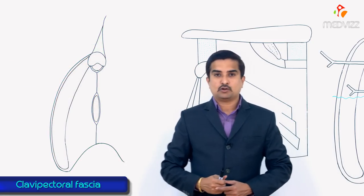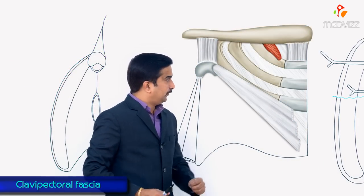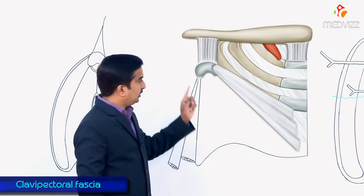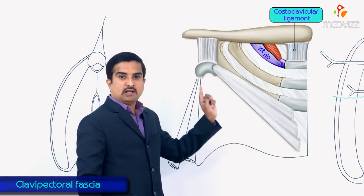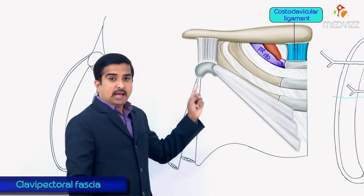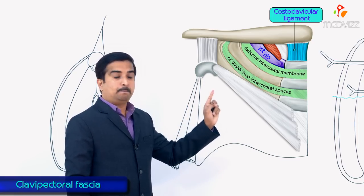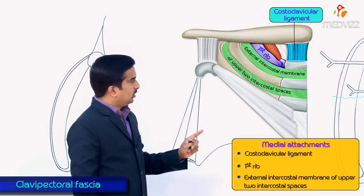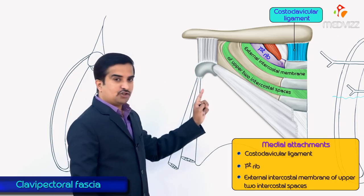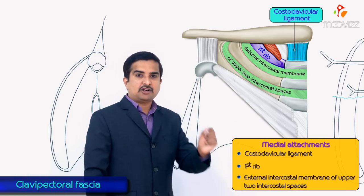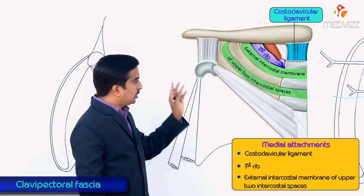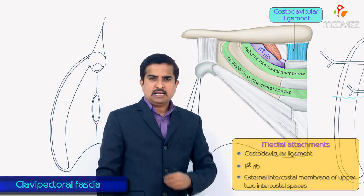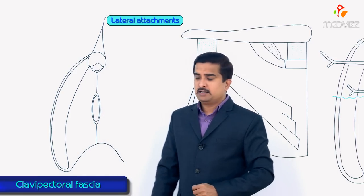Regarding the medial attachments of the clavipectoral fascia: medially it is attached to the first rib, the costoclavicular ligament, and blends with the external intercostal membrane of the upper two intercostal spaces. These are the medial attachments of the clavipectoral fascia.